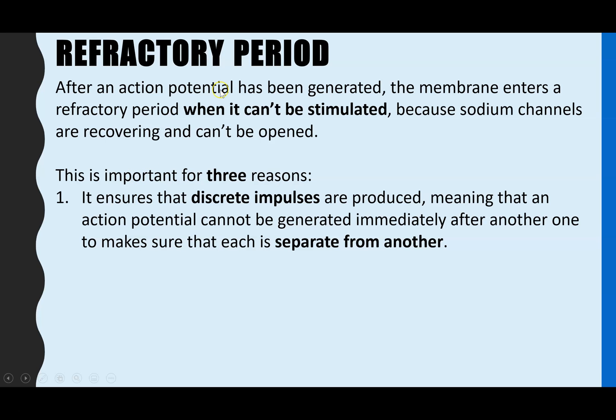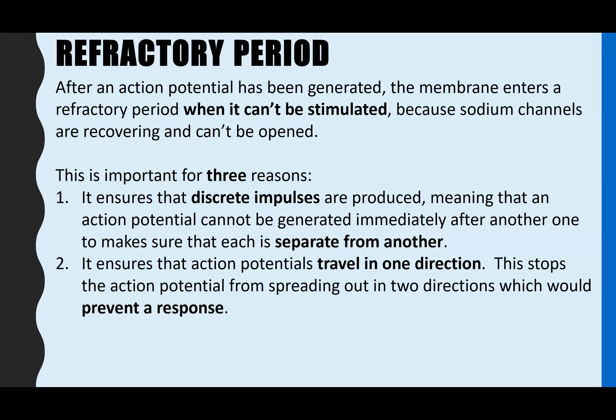So the refractory period is really important for three reasons. Number one, it's to ensure that discrete impulses are produced. What we mean by that is you don't have any overlaps, so you can't have an action potential being generated immediately after another one. And that's to make sure each action potential is separate from another. So you're able to process that information in more detail and identify exactly what the stimulus was and where it came from.